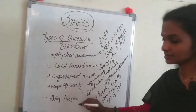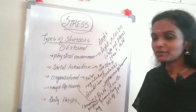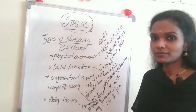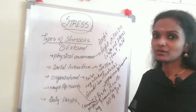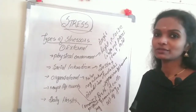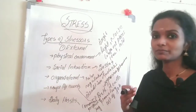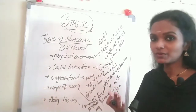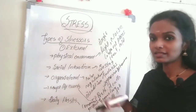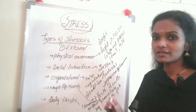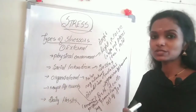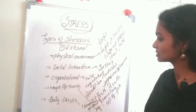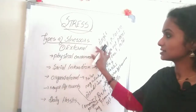Another external stressor is daily hassles. Examples include commuting, misplacing keys, or breakdown of mechanical things, all of which may cause stress. Commuting means traveling from home to workplace and back — having to travel from early morning and coming back at midnight, not getting enough time to spend with family.